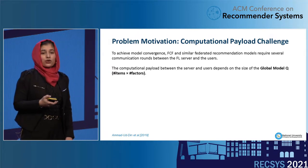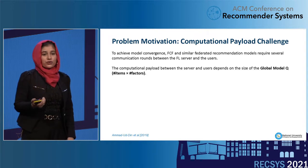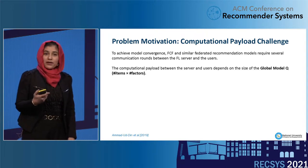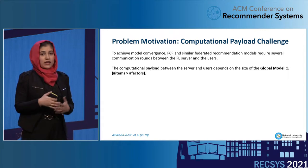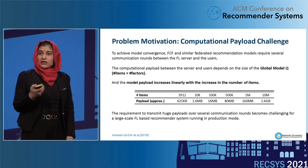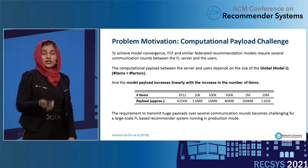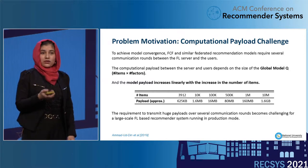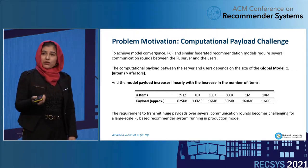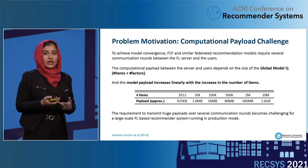There exists a key challenge of computational payload in FCF and other similar recommender systems. To achieve convergence, it requires several communication rounds between the server and the users, and the computational payload in each round depends on the size of the global model. In our case, the size of the global model is the number of items times the number of vectors. So the model payload depends directly on the number of items and increases linearly with the number of items. As shown in the table, recommender system items ranging from 3,000 to 10 million can have a payload exceeding 1 GB, which is quite huge, making transmission over several communication rounds very challenging in production mode.